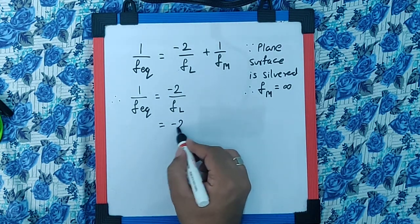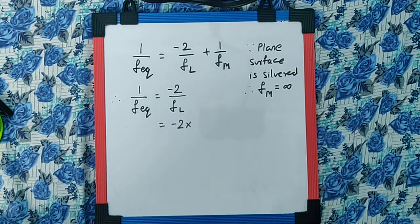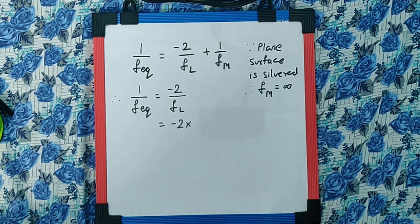By the formula of the focal length of lens, 1 by f, we know it is mu minus 1 bracket 1 by R1 minus 1 by R2.